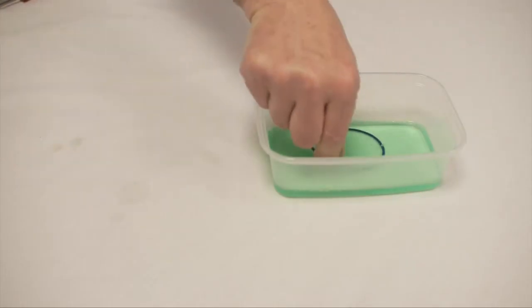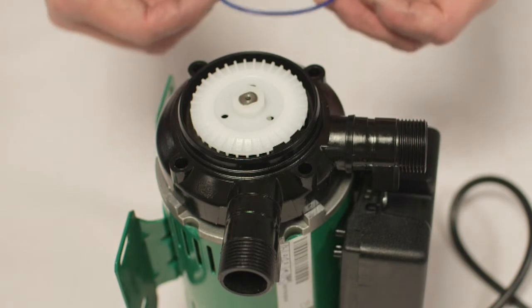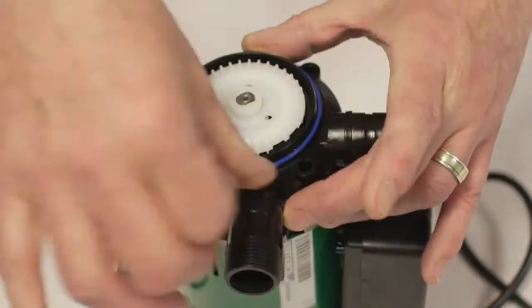Lubricate and fit the new blue O-ring, ensuring it is not rolled and is fully in place within the outlet seal housing.